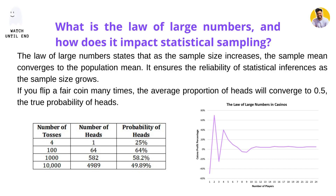If you flip a coin only four times, the number of heads might come up only once, making the probability of heads 25%. But as soon as the number of tosses increases, the probability of heads — which is actually 50% for a coin — converges to that true probability easily. This is the law of large numbers.